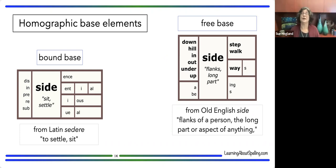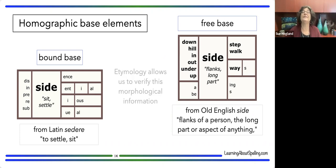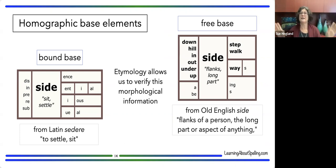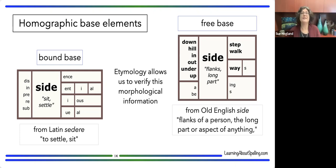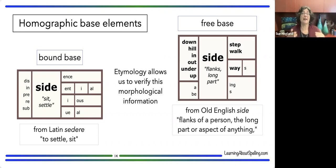Don't be concerned that you would have to know every base or its etymology to help students understand morphology. I'm giving you these examples to illustrate the ideas, but you might use completely different examples. The important thing is the concept: base elements have an orthographic denotation, they can be free or bound, and they can be homographic — same spelling but different senses. Understanding this is extremely powerful for literacy instruction, and I see it being missed a lot.